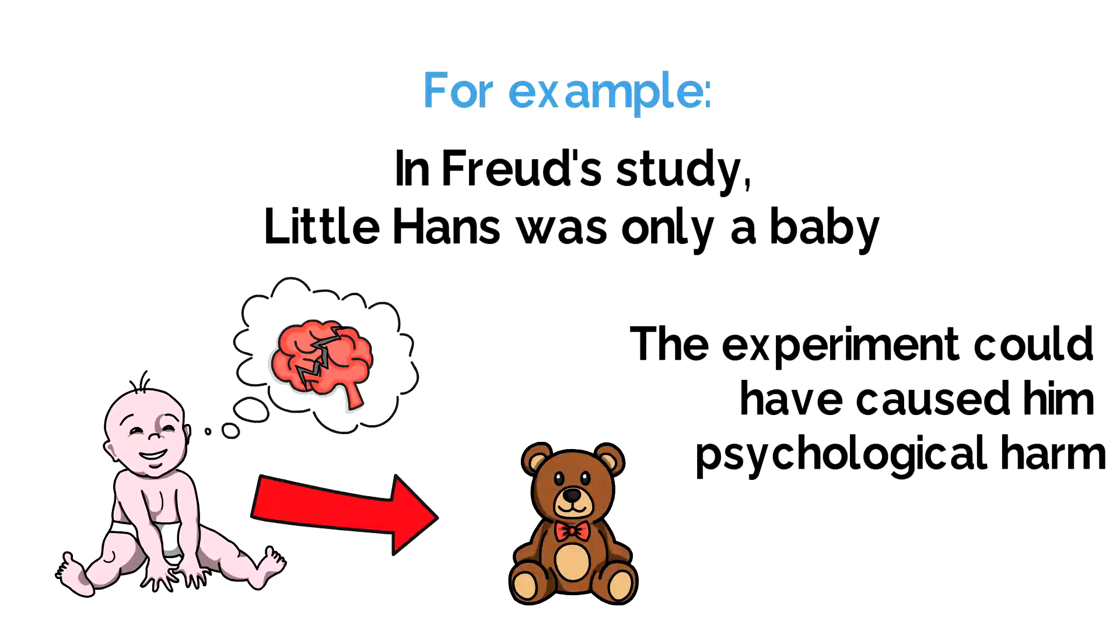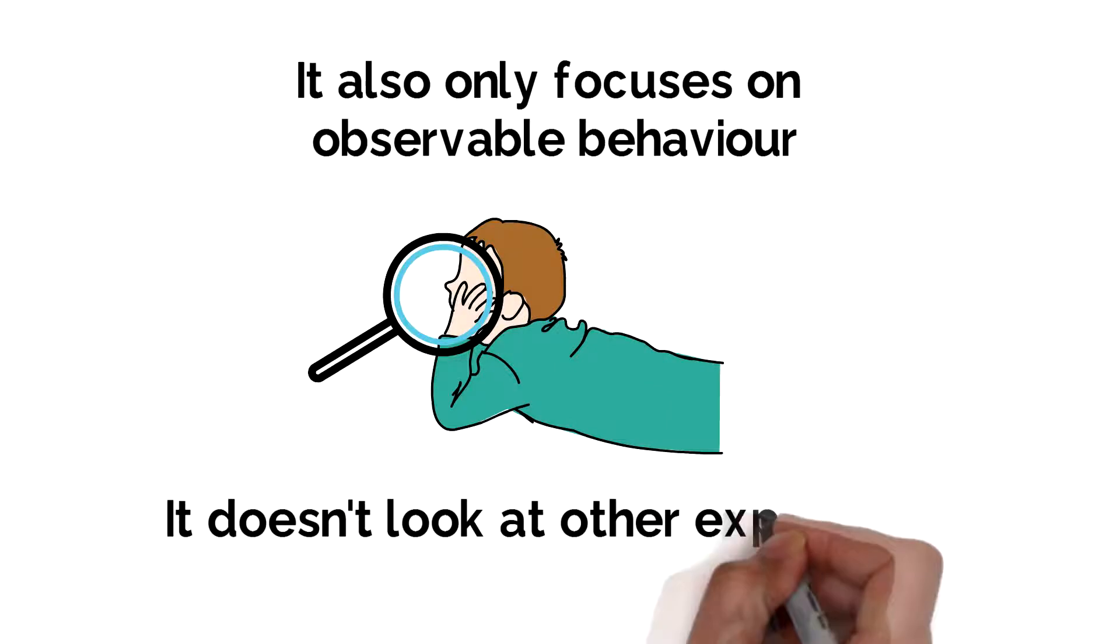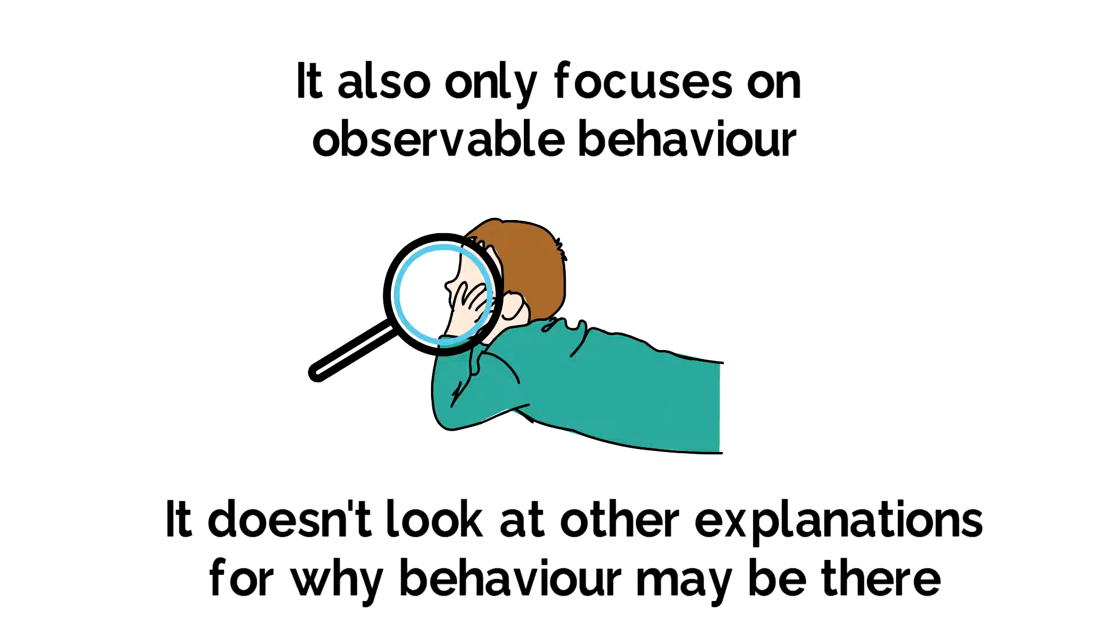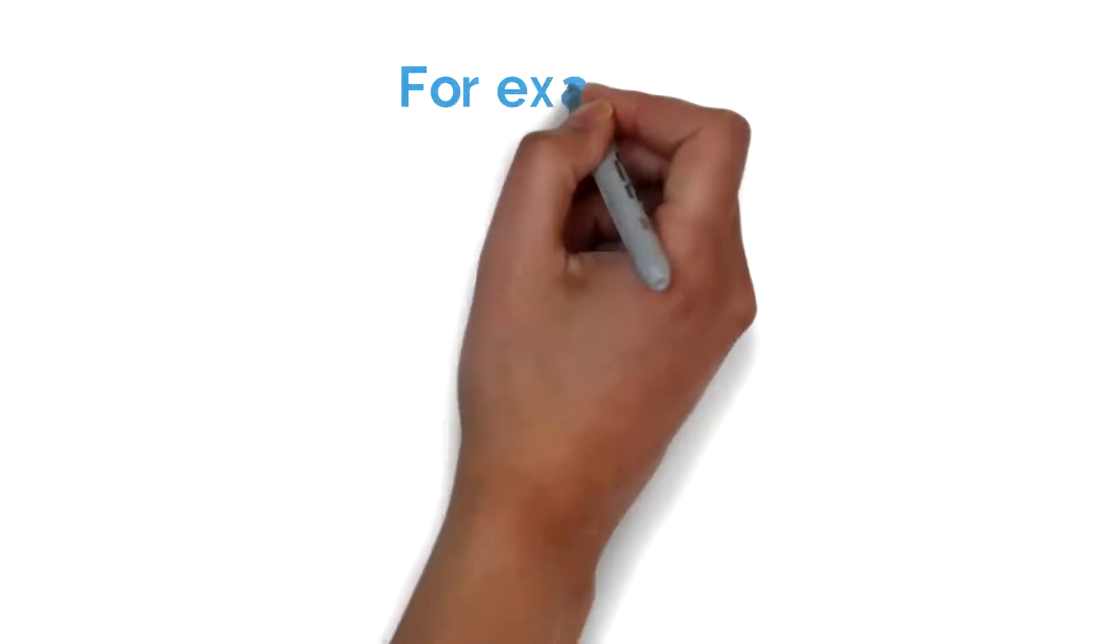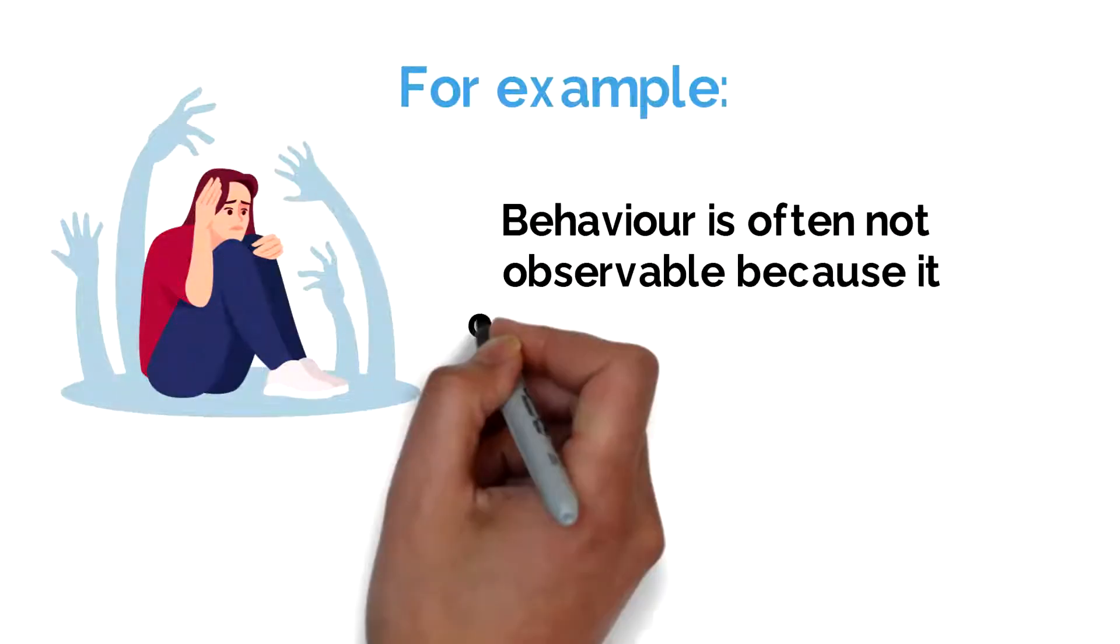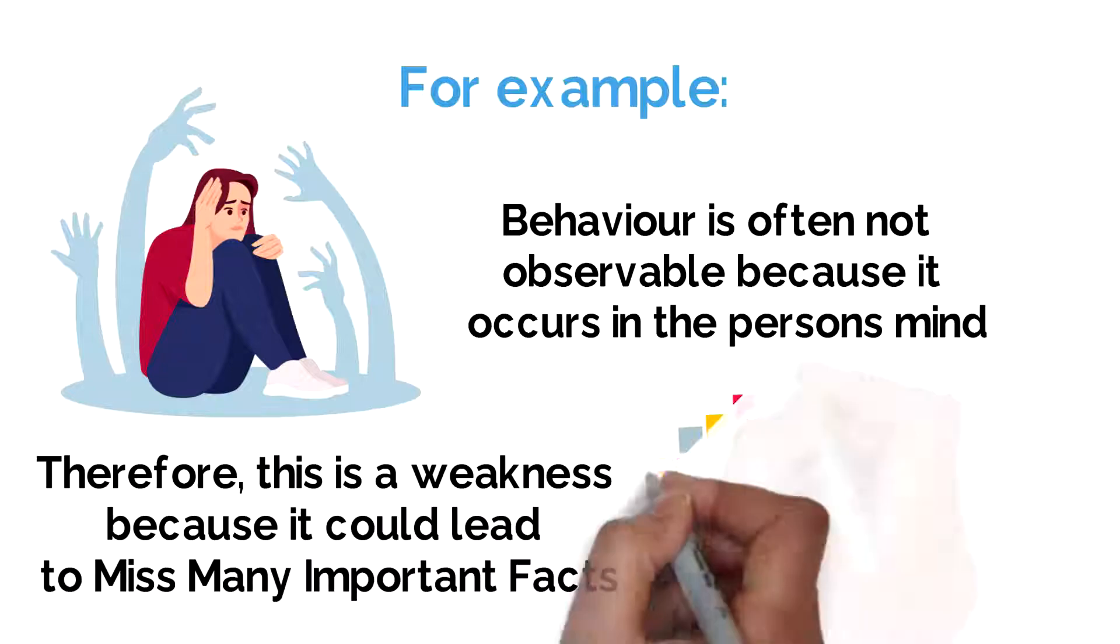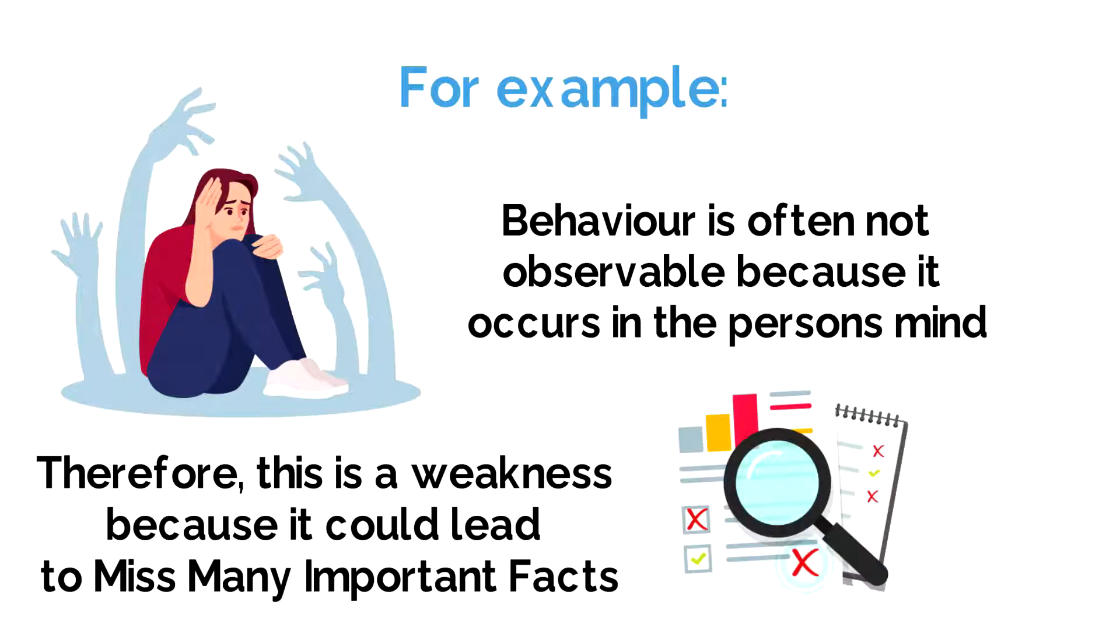It also only focuses on observable behaviour, and is therefore reductionist. It doesn't look at other explanations for why behaviour may be there. For example, with schizophrenia, it is not often observable, because it occurs in the person's mind. Therefore, this is a weakness of the approach, because it is reductionist, which could cause them to miss out on very important factors.